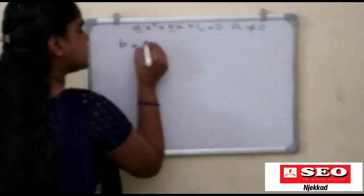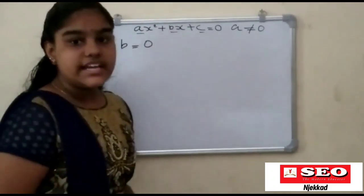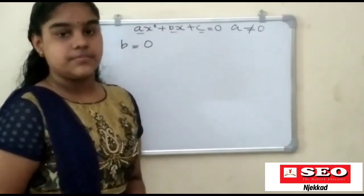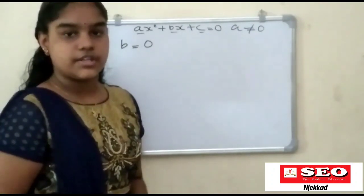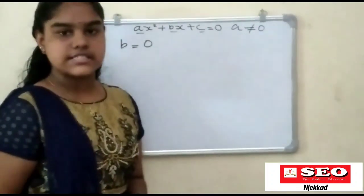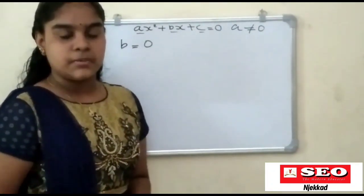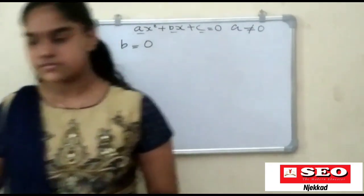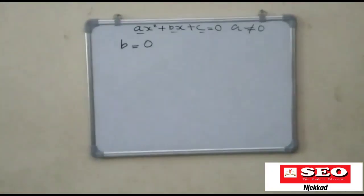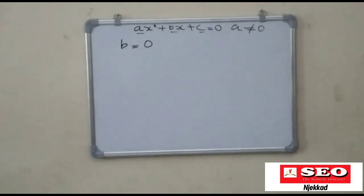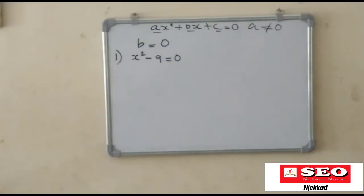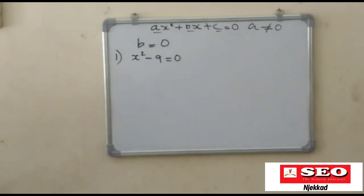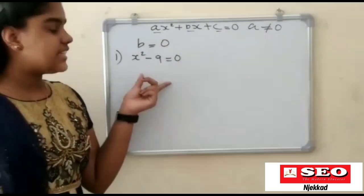Now let's look at when B is equal to zero. If B is equal to zero, we can evaluate it here. If we have an equation, we can work it out here. So let's look at that.